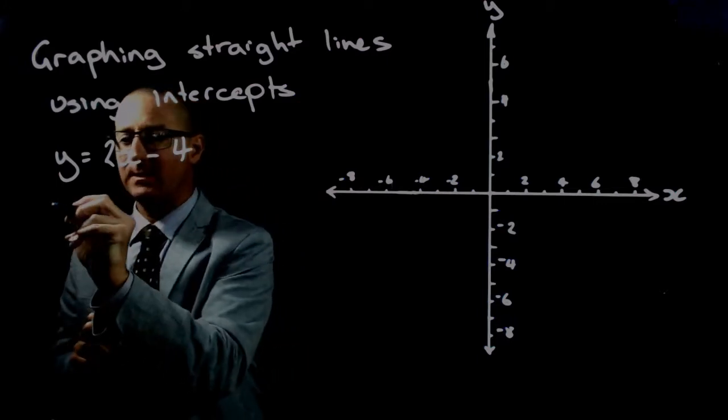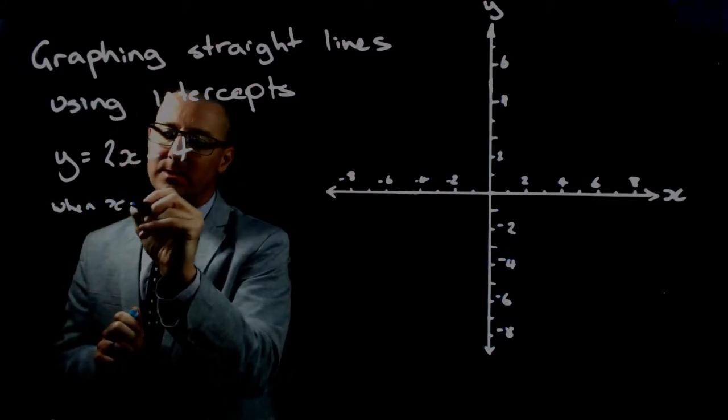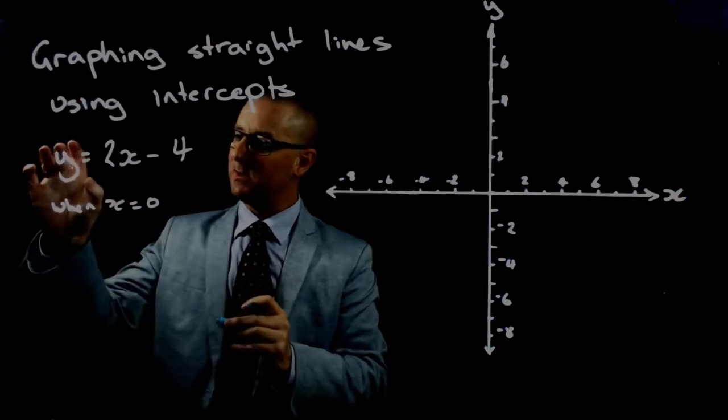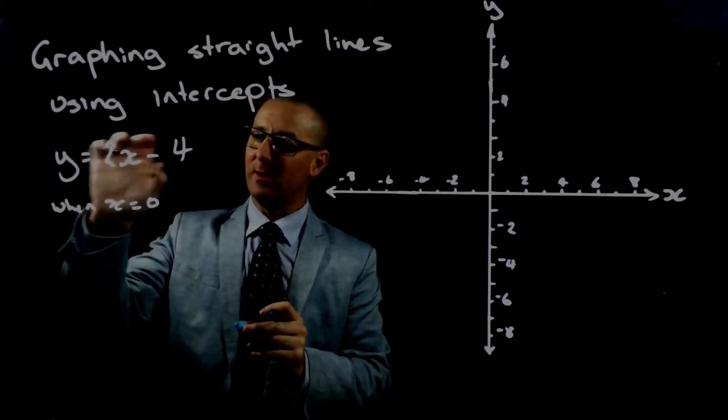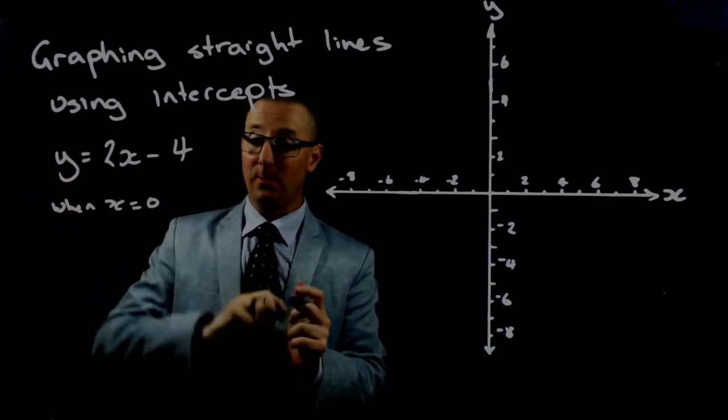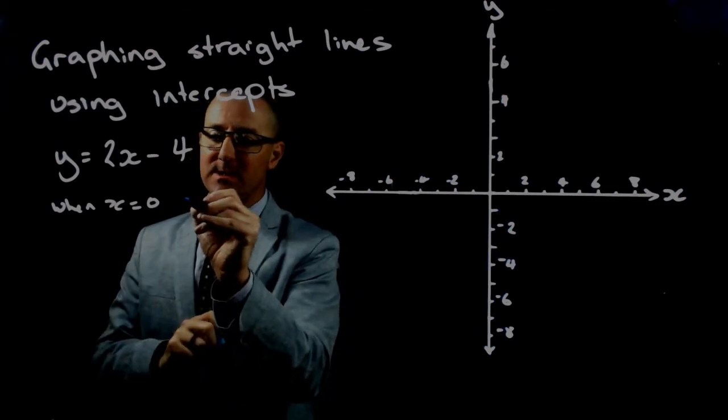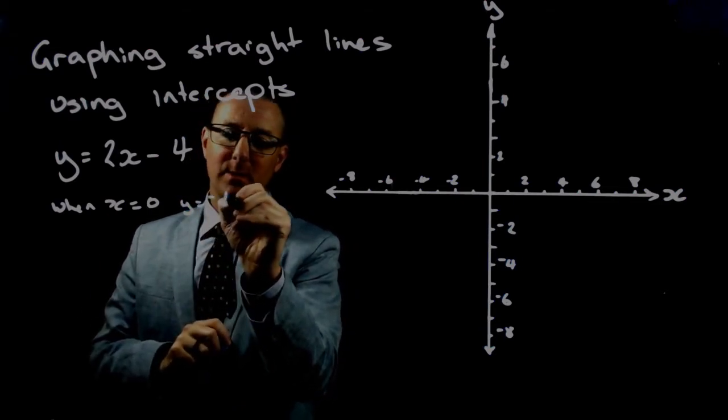First, when x equals 0, we substitute 0 into this equation and find that y equals 0 minus 4. So when x is 0, y is going to be minus 4.